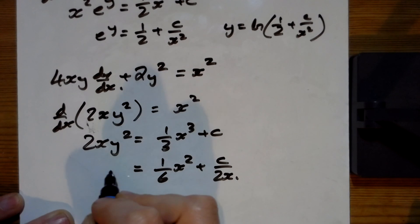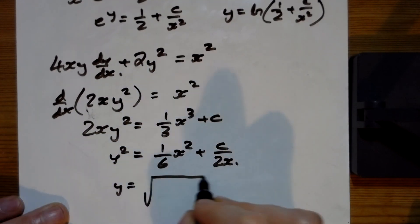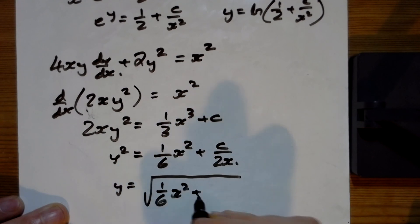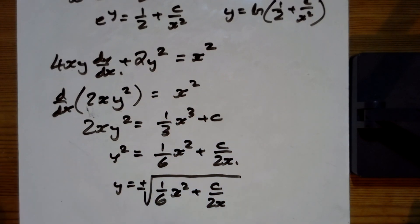And then we'll have to square root it all, won't we? So y equals the square root of 1 sixth x squared plus c over 2x. And I guess we'll need to have a plus or minus outside the square root as well. There's that one.